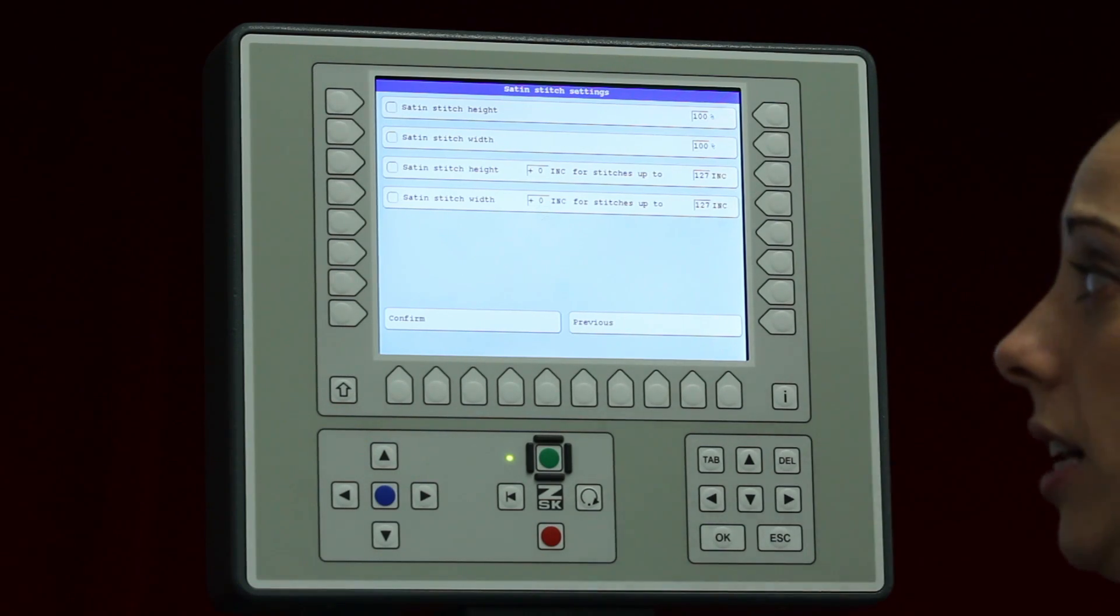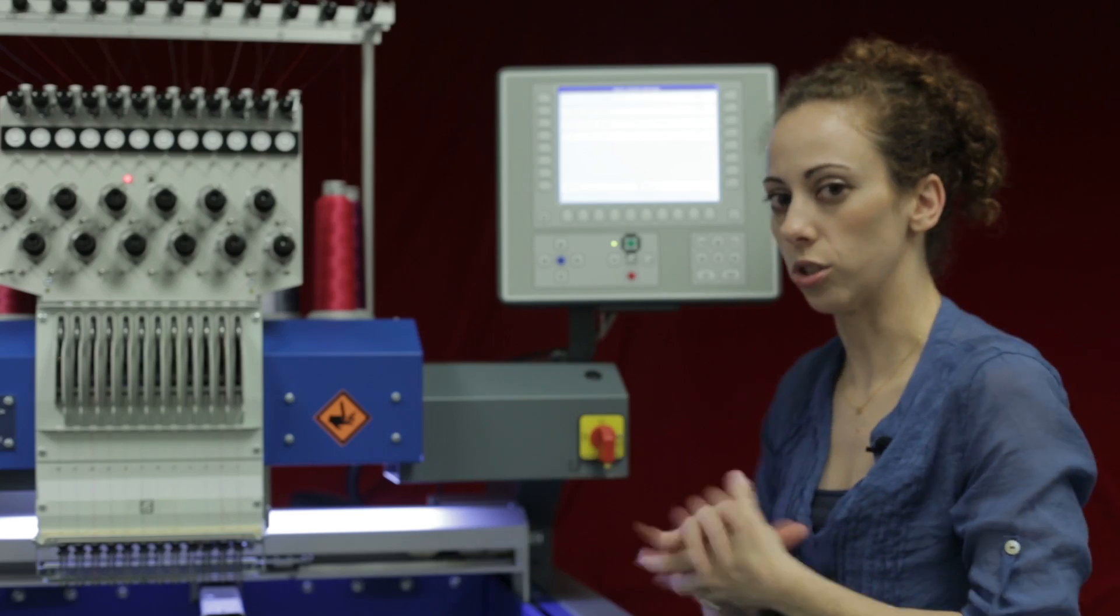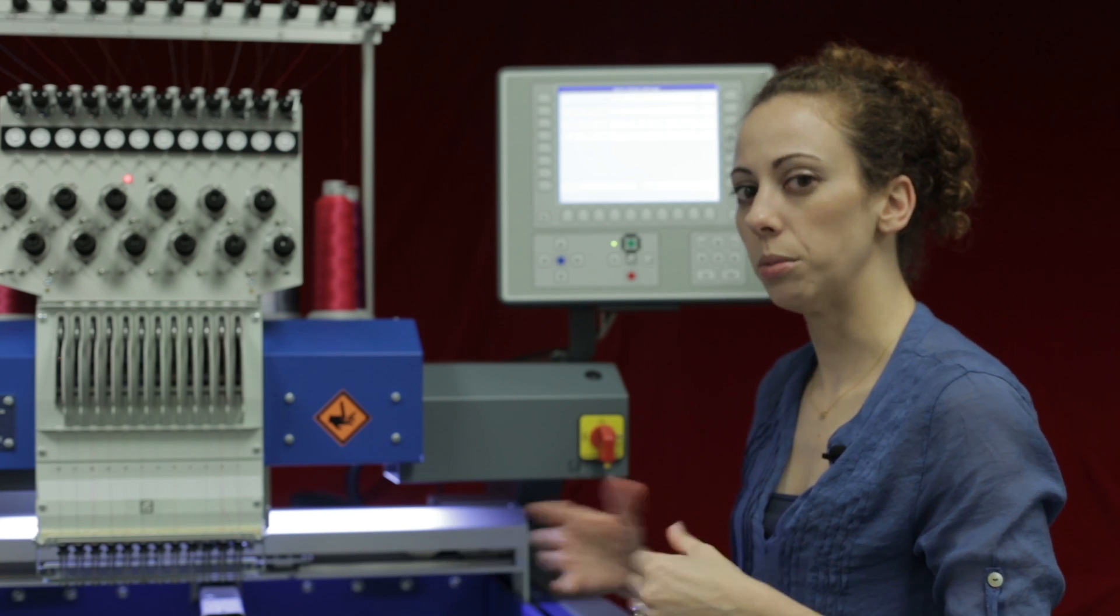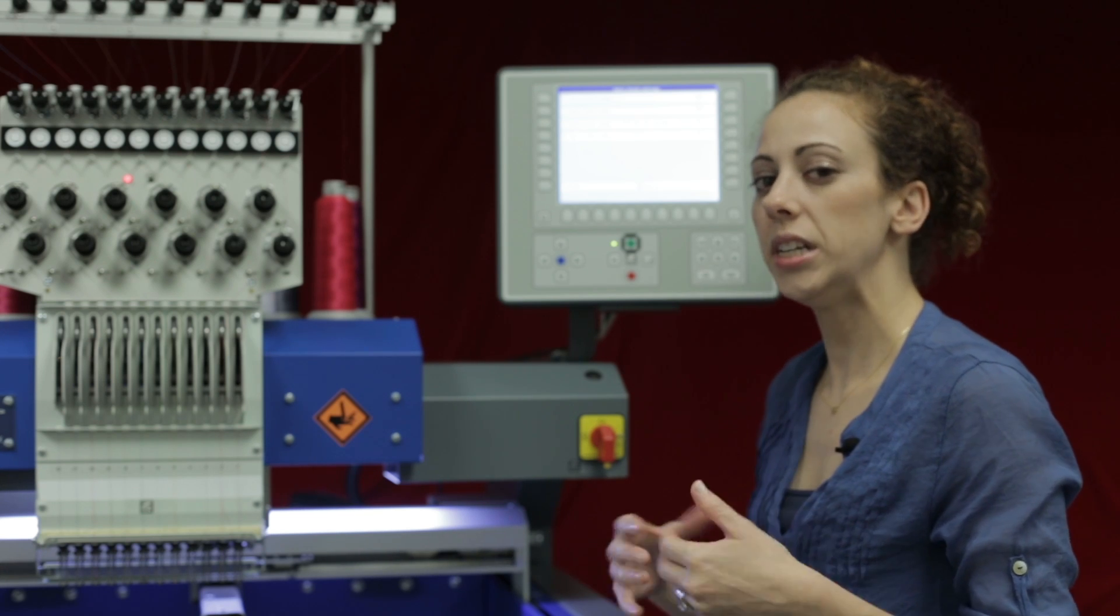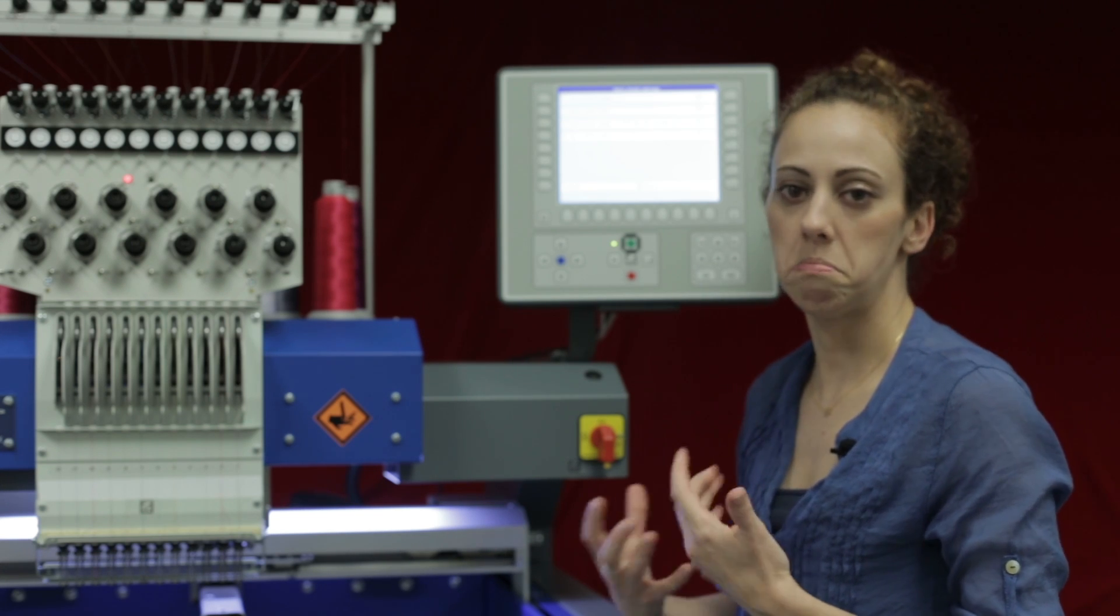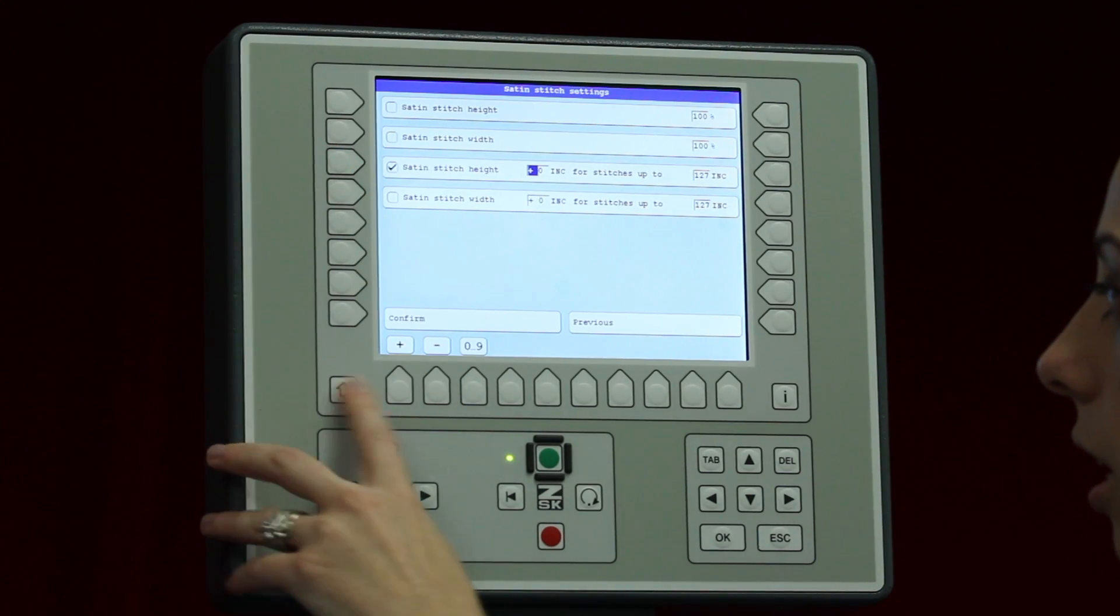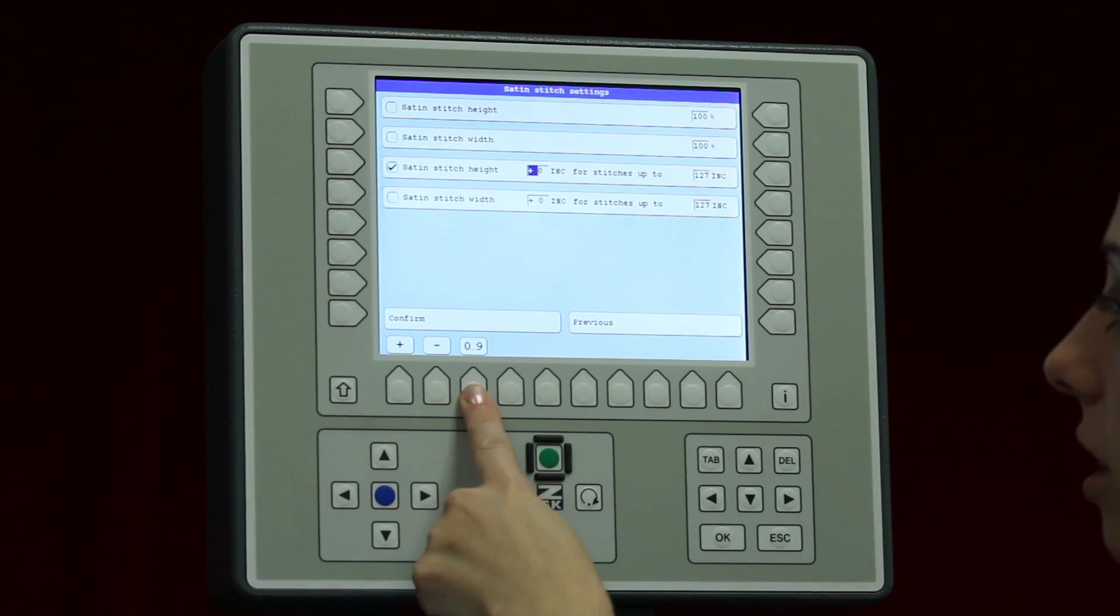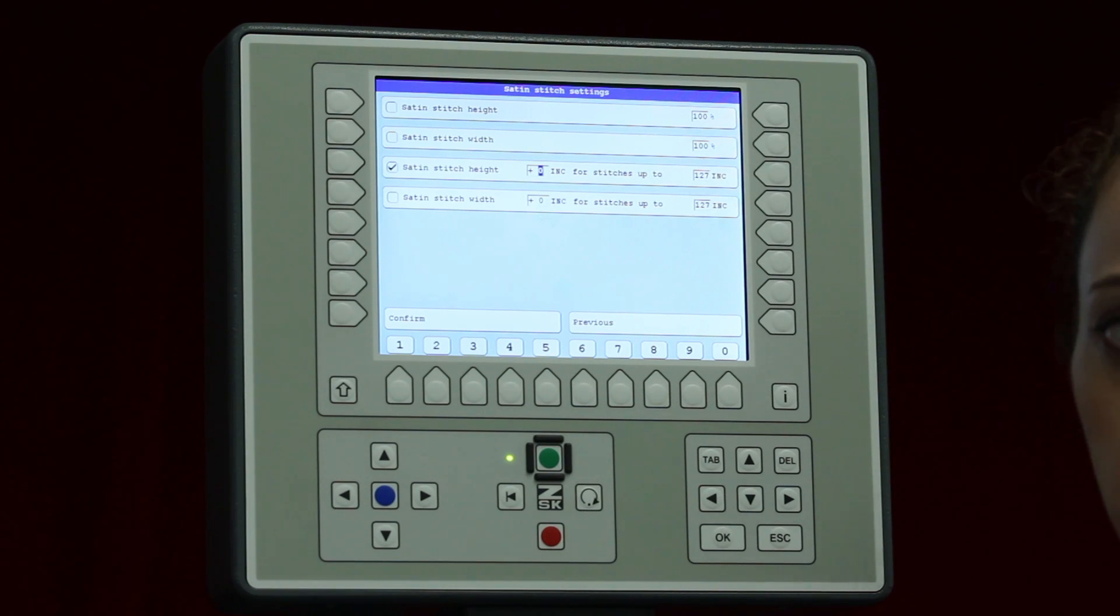The next thing is the stitch height and width according to increments up to a certain size. Now increments, if we think of increments in millimeters, five increments is equal to 0.5 millimeters or half a millimeter. So if I need to increase my stitching, maybe my satin stitching, maybe a half a millimeter, I would go ahead and select this, hit the plus sign because I want to go up. I would hit zero through nine and then choose five. That means I would go up half a millimeter.